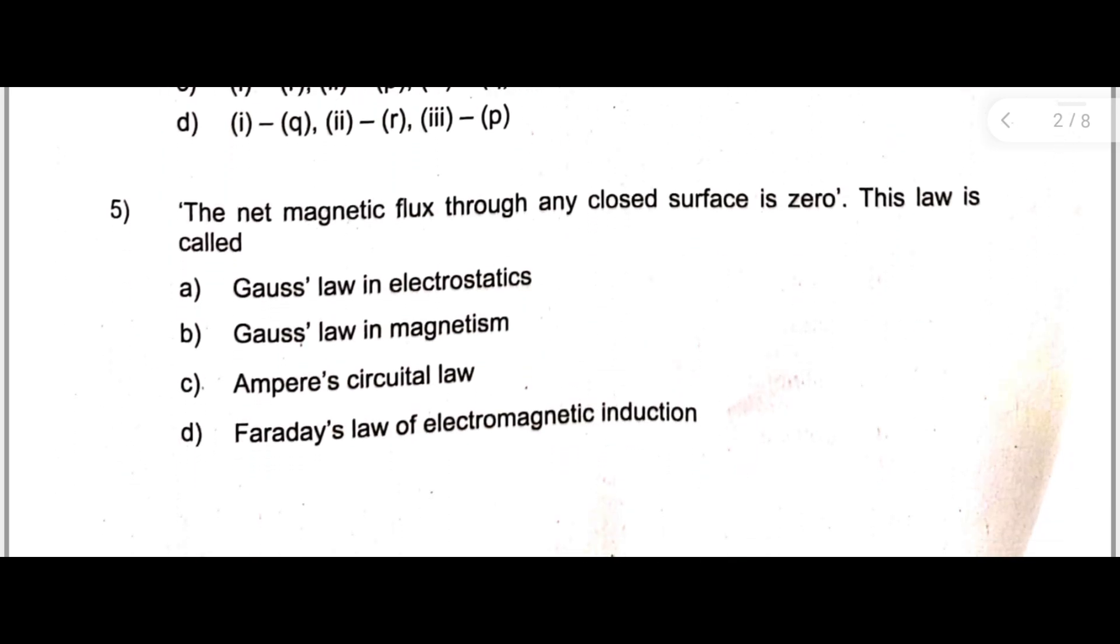Next, fifth question. The net magnetic flux through any closed surface is zero. This law is called - the correct answer is Gauss's law in magnetism.